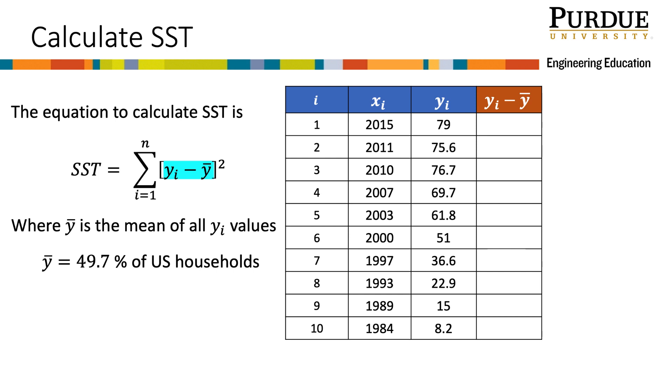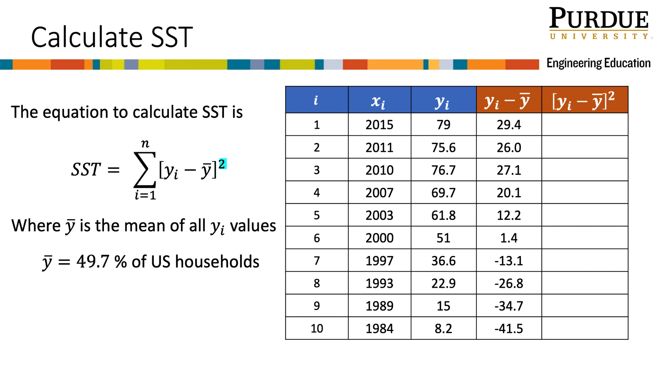So for the first value in the table, we take 79 minus 49.7 to get 29.4. I repeat subtracting 49.7 for all other y i's. Now I need to square the difference terms. So I will square the 29.4 to get 861.4, and repeat squaring for all the other difference terms.